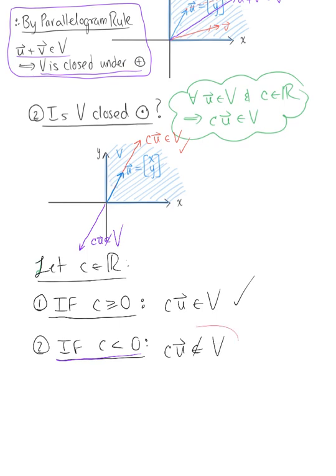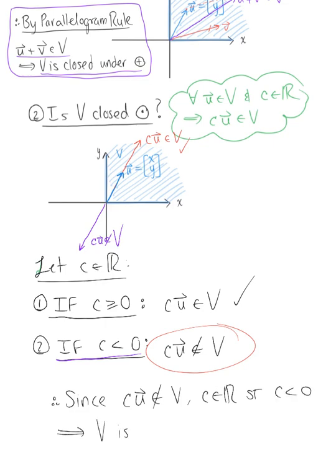And so because of this one case here, we can say, therefore, since the scalar multiple c times u is not in V for real numbers c that are less than zero, V is not closed under scalar multiplication.